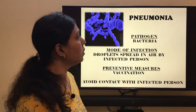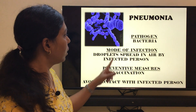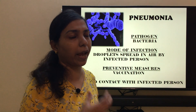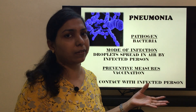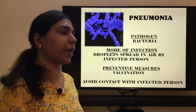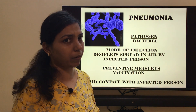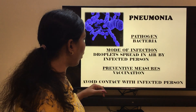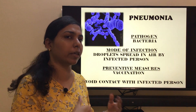Next is pneumonia, which is caused by a bacteria. The mode of infection is droplets spread in the air by an infected person — if someone suffering from pneumonia coughs or sneezes without covering their mouth, the bacteria spreads in the surrounding air and others nearby can get infected. Preventive measures include vaccinations available for pneumonia, which children should receive, and avoiding contact with infected persons.